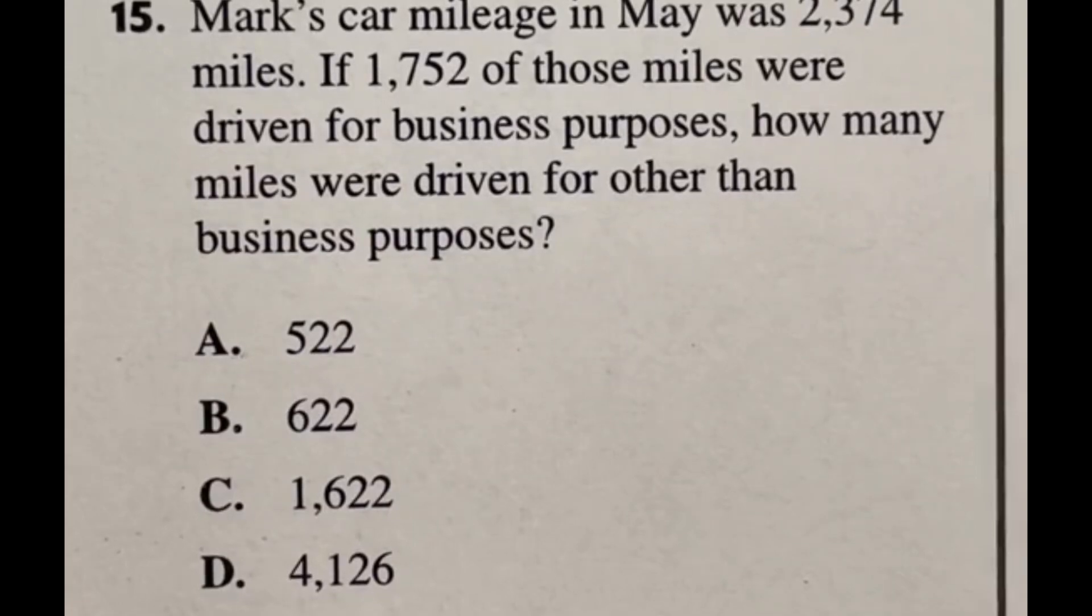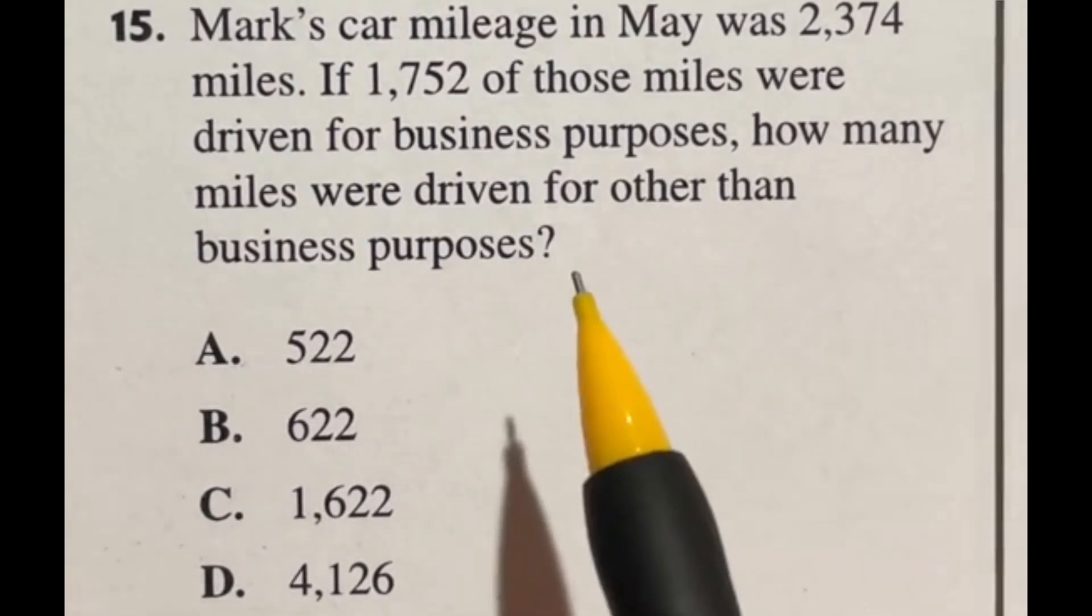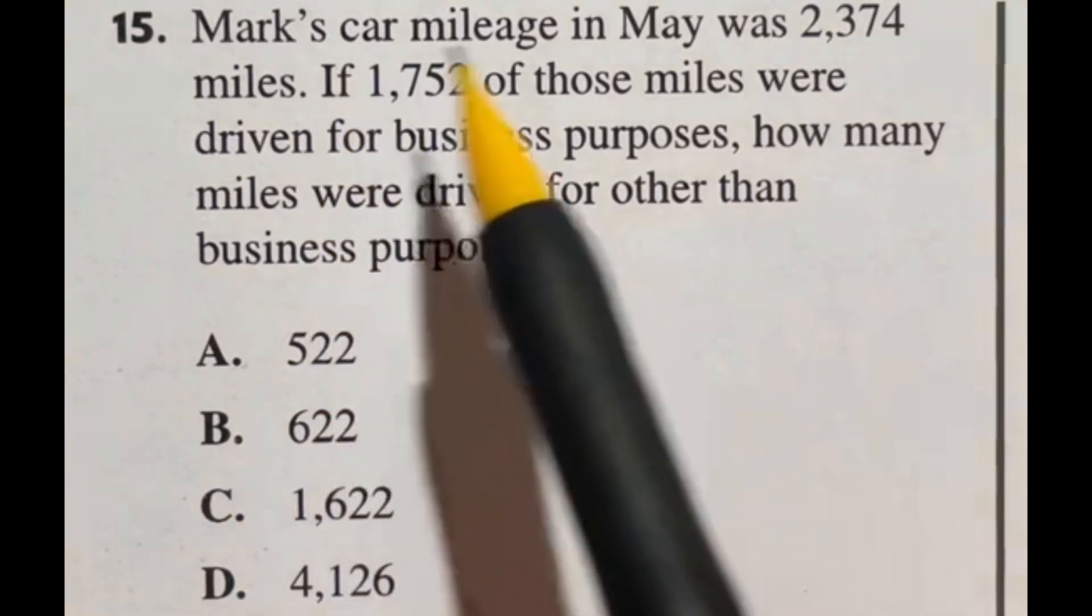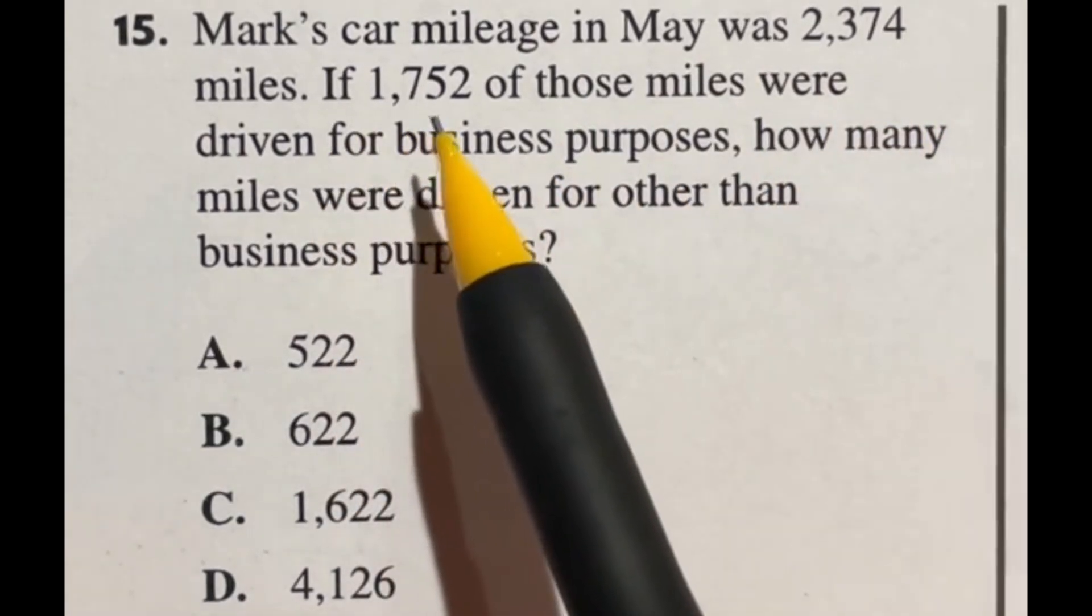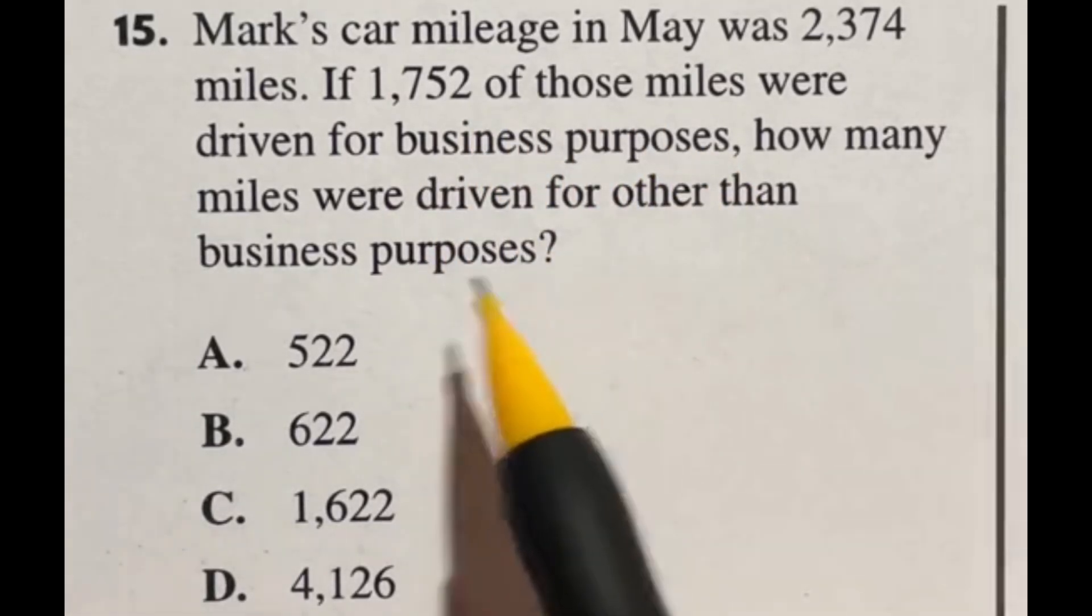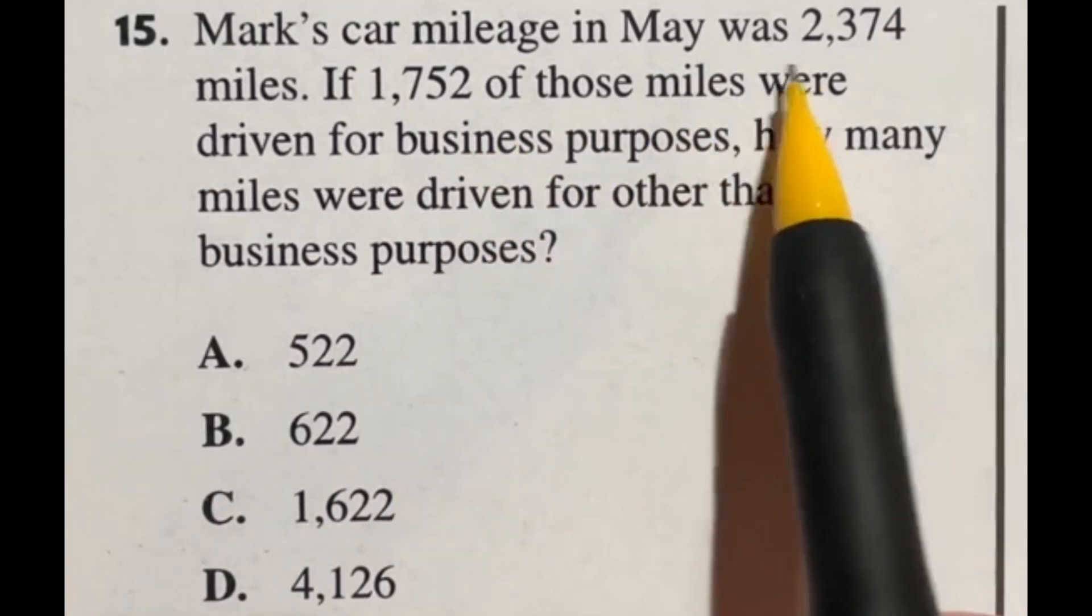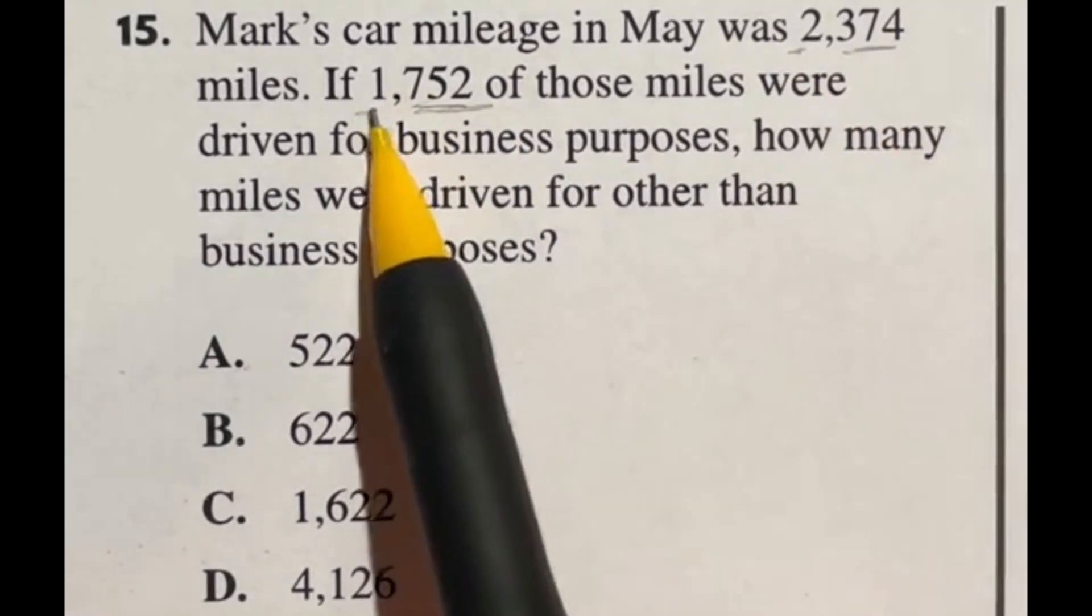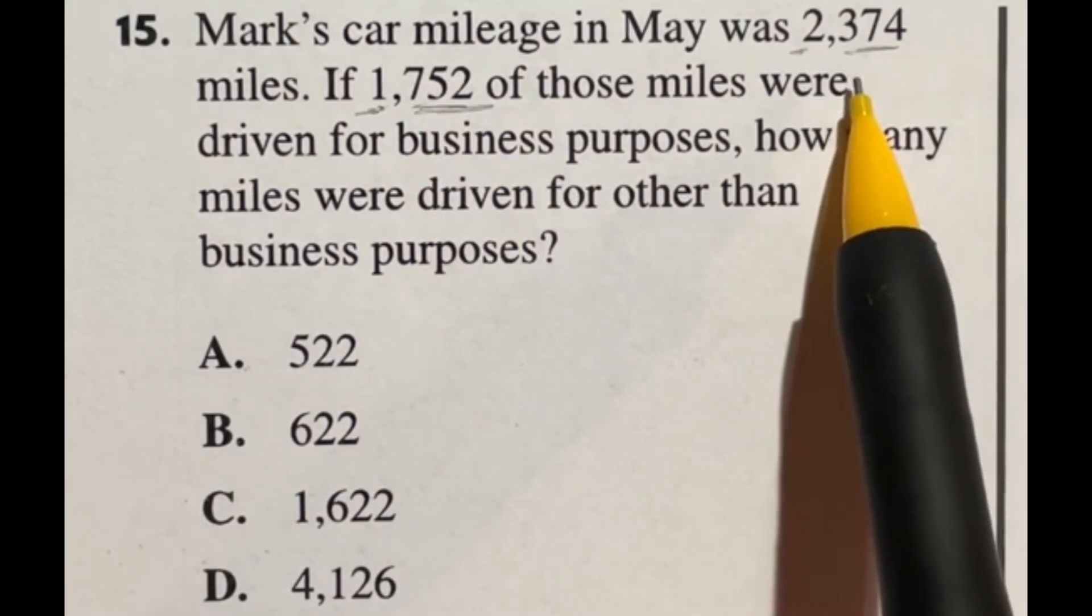So number 15 on the ASVAB, again, is one of those situations where you're going to check first, am I able to quickly do this, or do I have to do it the long way? It says Mark's car mileage in May was 2,374 miles. If 1,752 of those miles were driven for business purposes, how many miles were driven for other than business purposes? So right off the bat, let's take a look here. This guy, the hundreds is higher than this, but the thousands is obviously one less. So that means that it's not a full 1,000 away, it's going to be less than that. Which means right off the bat, we're looking at either A or B.